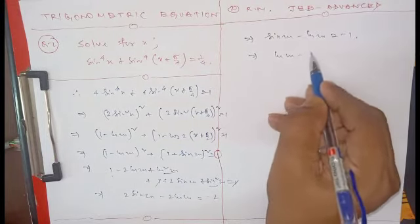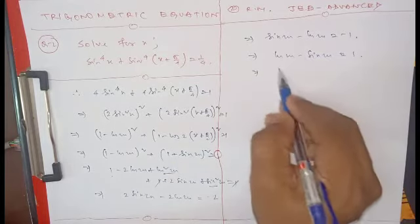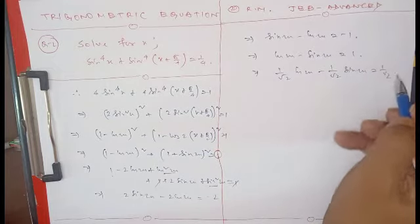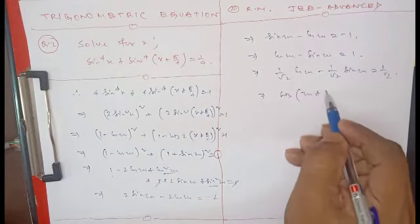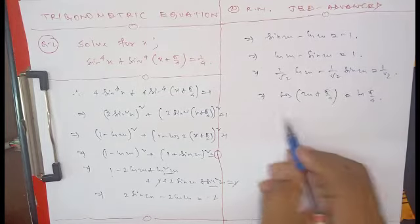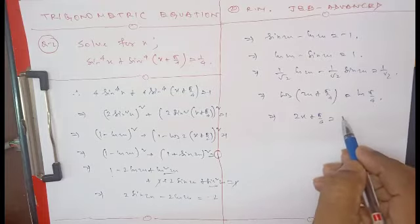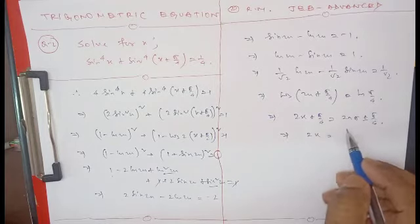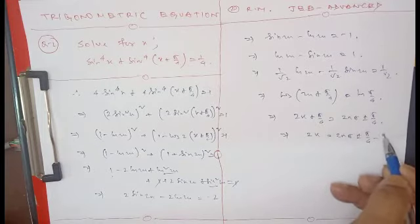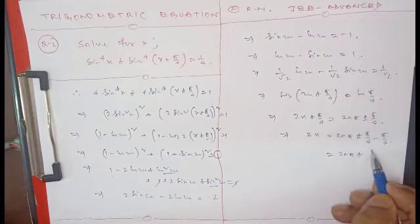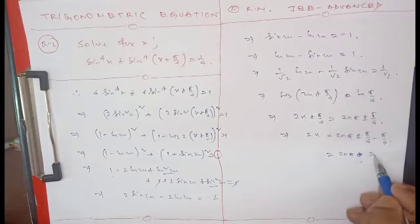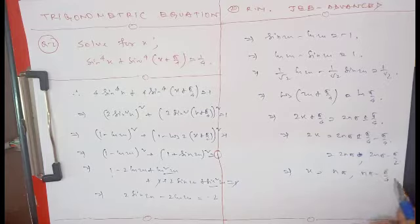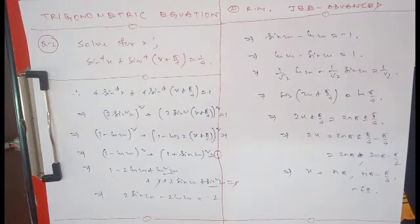Rearranging: cos 2x - sin 2x = 1. Dividing both sides by √2: (1/√2)cos 2x - (1/√2)sin 2x = 1/√2. This gives cos(2x + π/4) = cos(π/4). Therefore 2x + π/4 = 2nπ ± π/4, so x = nπ or x = nπ - π/4, where n belongs to integers.